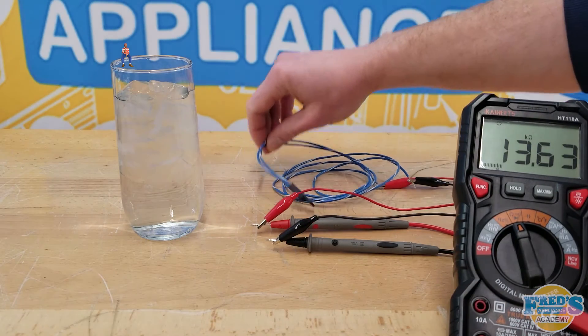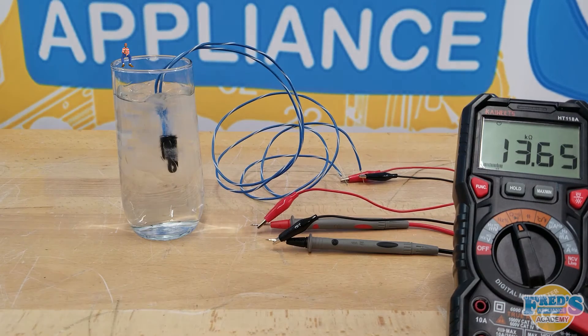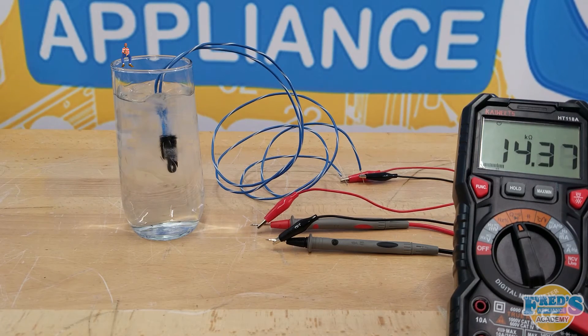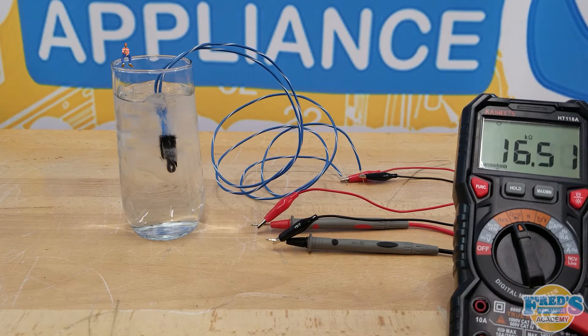Here we can see the thermistor reads about 13,600 ohms and immediately starts to increase in resistance once submerged into the water. The resistance of the thermistor will continue to rise until the thermistor itself has reached 32 degrees.